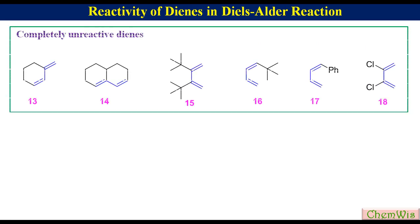These are examples of dienes that are completely unreactive towards the Diels-Alder reaction. Compounds 13 and 14 are unreactive because the diene is locked in S-trans conformation.